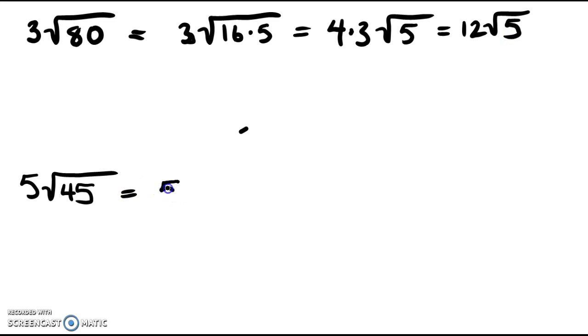Last one. 5 and 45 is 9 times 5. The square root of 9 is 3. I'm keeping this 5 on the outside, and this 5 stays on the inside. The final answer, 15 square root of 5.